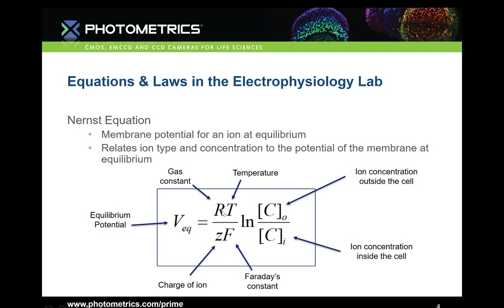R is the gas constant. T is the temperature in Kelvin. Z is the charge of the ion in question — so if you are talking about sodium, that will be plus one, or if you're talking about calcium, it would be plus two. F is Faraday's constant. And the natural log of the concentration outside of the cell versus inside of the cell.